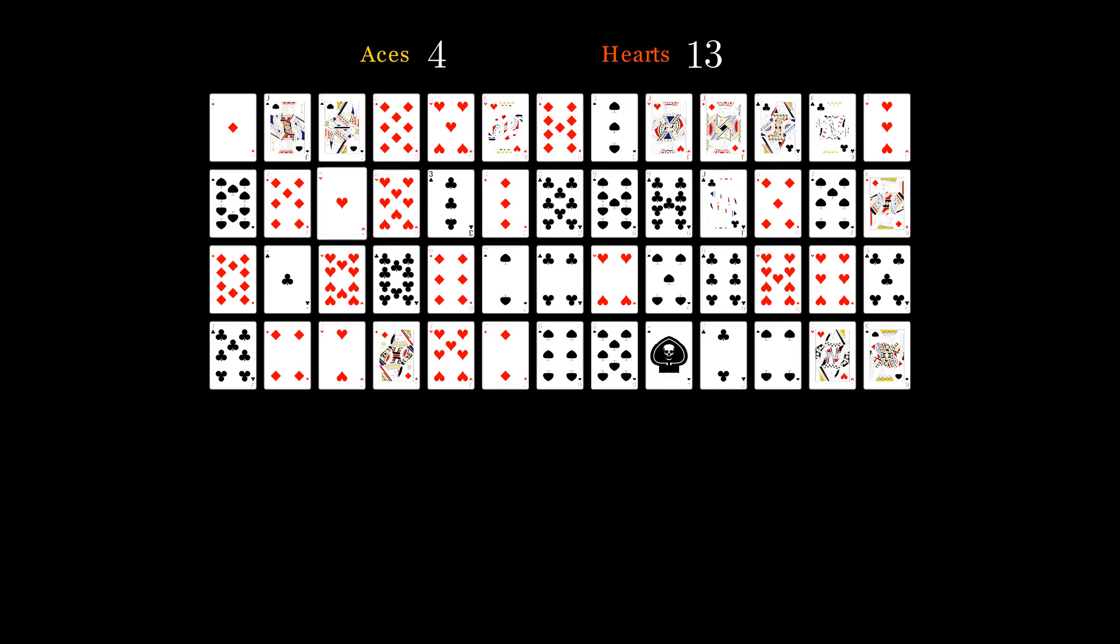There is only one card that is both an ace and a heart. Therefore, the probability of drawing an ace of hearts would be 1 divided by 52. The conditional probability of drawing an ace given heart has already been drawn can be calculated by plugging in the values in the formula. After simplifying, we get the probability of drawing an ace given heart has already been drawn as 1 divided by 13.